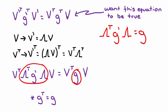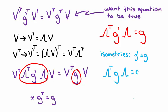However, we are often interested in a special set of transformations called isometries, or isometric transformations. Isometric transformations are defined where the transformed metric has the same components as the original metric. When lambda is an isometry, we can write g equals g', and our transformation rule becomes lambda transpose g lambda equals g. If we know the isometries of a space, then we can find the metric that describes that space. Alternatively, if we know the metric of a space, we can derive the isometries.